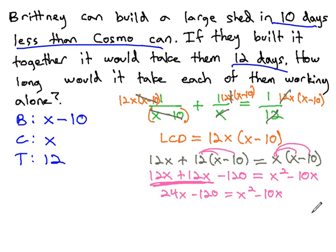We need the equation to equal zero, so let's move everything to the right. Keeping x squared positive, we'll subtract 24x and add 120.